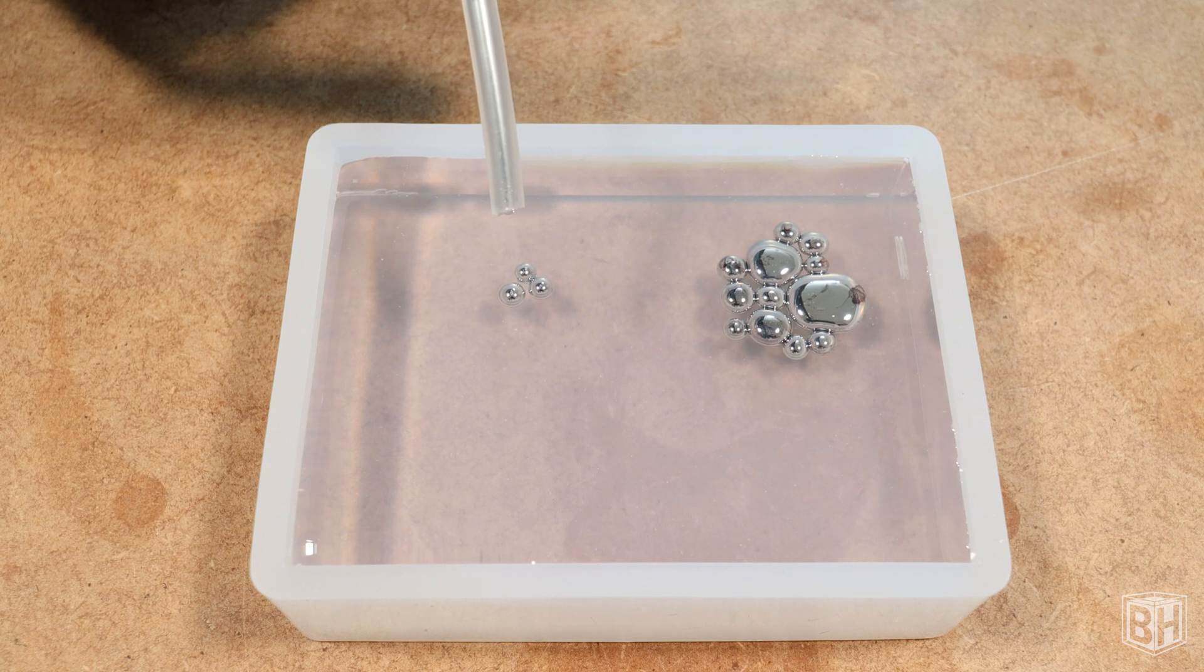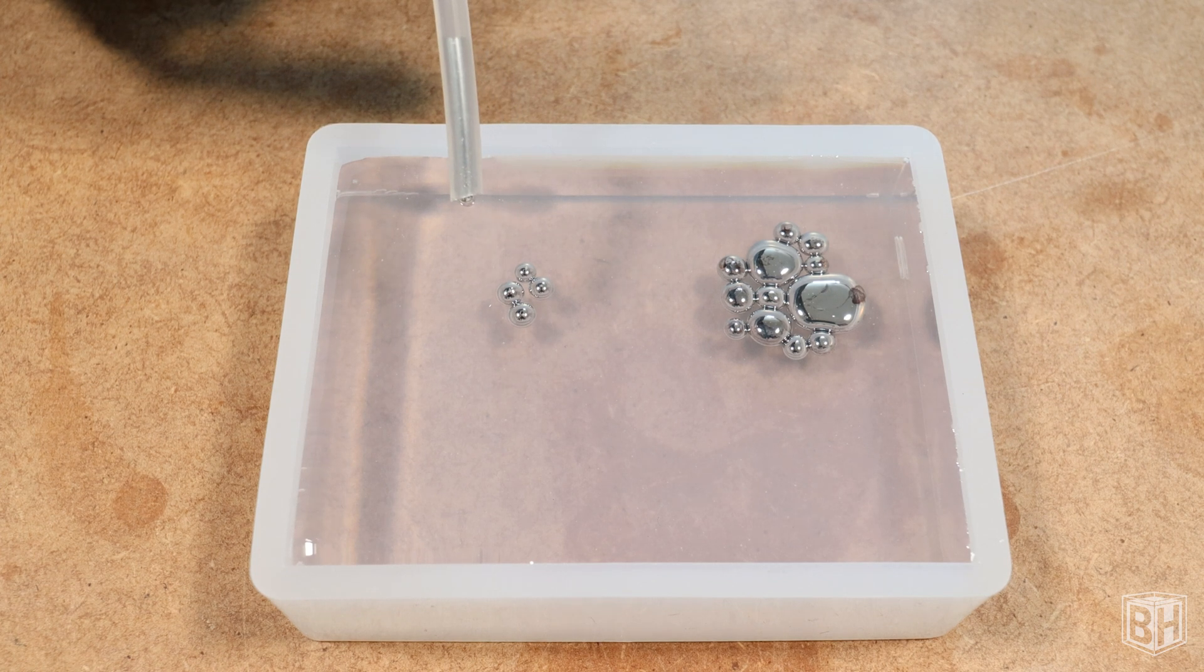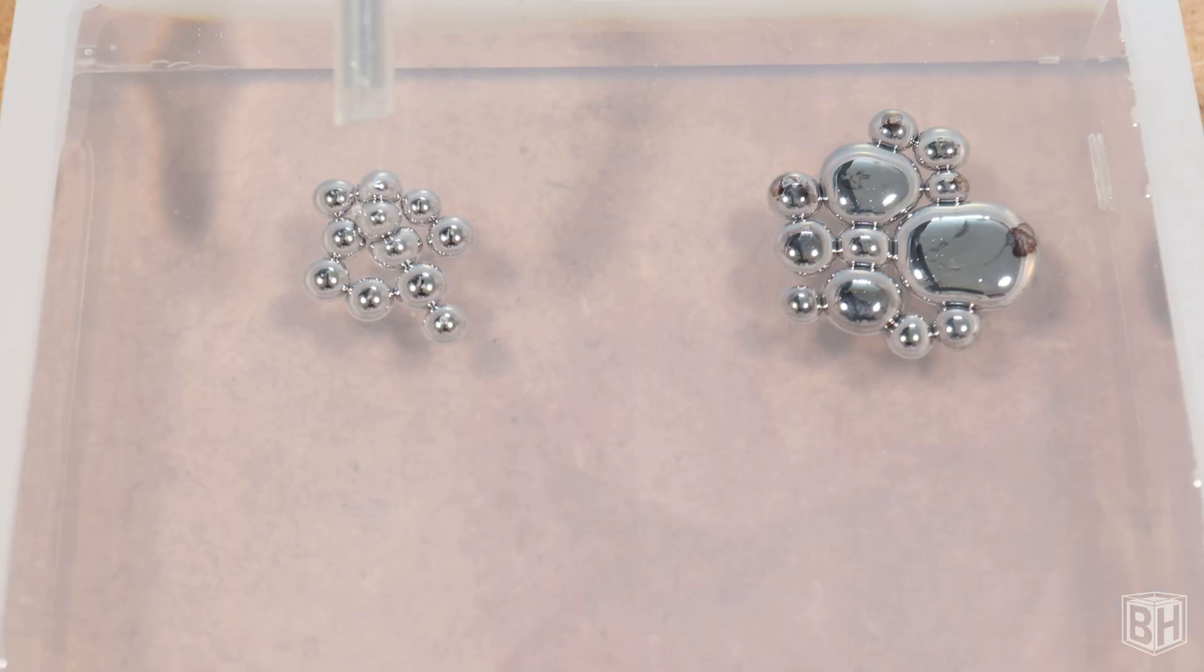So immediately I can see we're getting a very different effect here by dropping the mercury into resin, as it's forming small ball-shaped drops rather than the large, less uniform shapes previously created. They look quite like ball bearings.